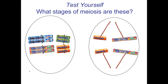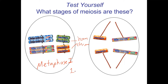Here's a quick test yourself: which stages of meiosis are these? Looking at the one on the left, we have two things together — those are the homologous chromosomes, so this has to be meiosis I. Since they're lined up in the middle, that's definitely metaphase I. Looking at the second one, the sister chromatids are separating using what looks like red licorice microtubules. So this is definitely meiosis II, and since they're separating, this would be anaphase II.